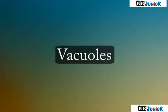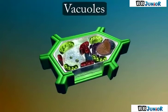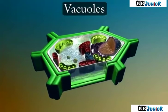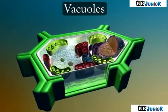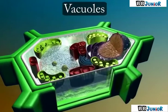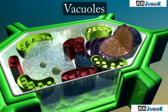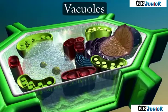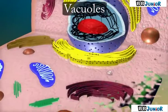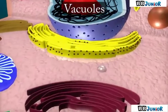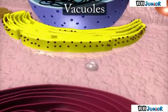Vacuole. Plant cells have one blank-looking structure called a vacuole. In plant cells, it could be single and big, while vacuoles in animal cells are much smaller.